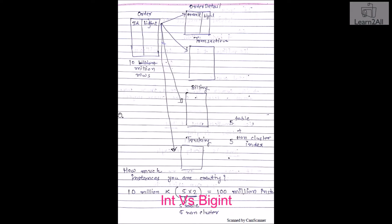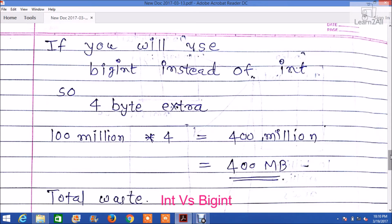Suppose you reference the order table with 4 other tables — order detail, transaction, billing, and tracking — and you have applied 5 non-clustered indexes on those tables. Suppose you have 10 million rows. So 10 million multiplied by 5 tables and 5 non-clustered indexes gives 100 million instances. If you use bigint instead of integer, you waste 4 extra bytes every time. So 100 million instances multiplied by 4 bytes equals 400 million bytes, which equals 400 MB wasted.